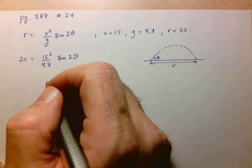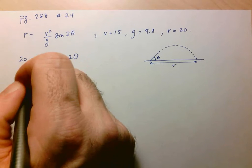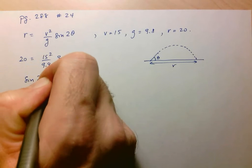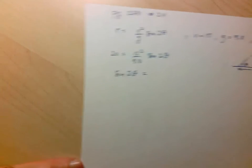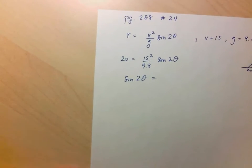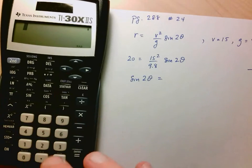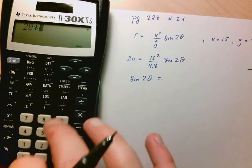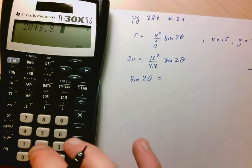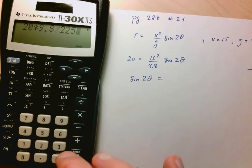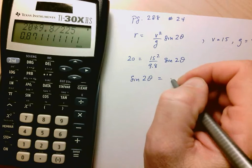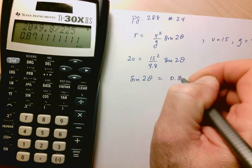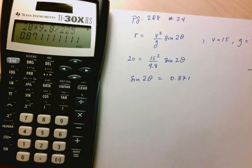Let's start by doing step one, which is to isolate our trig ratio. In this case, sine of 2 theta. We've got 20 times 9.8 divided by 15 squared, which is 225. So sine of 2 theta equals 0.871.